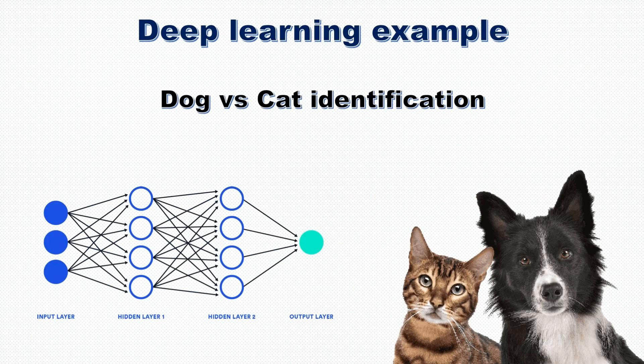One common example is dog versus cat identification for deep learning. Let me show you the image on the left side — it is a layer of network which is used in CNN. It has an input layer, hidden layer 1, hidden layer 2, and an output layer. We can have many hidden layers based on our needs. Based on these layers, deep learning will extract features on its own and finally give an output. This is how deep learning works.